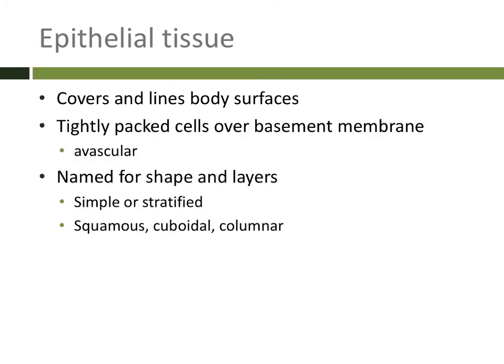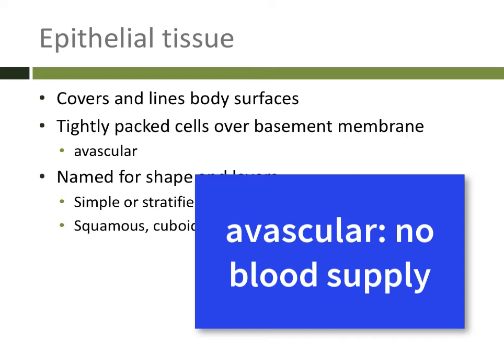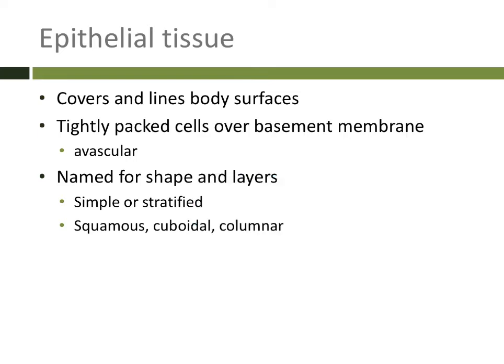Epithelial tissue is made up of very tightly packed cells that are attached to a basement membrane on the bottom. If you imagine a bunch of people standing very closely together with their shoulders touching shoulder to shoulder, that's kind of what epithelial cells look like when they work together in a tissue. One of the hallmarks of epithelial tissue is that they are avascular, meaning they don't have their own blood supply. The cells have to get their blood through the basement membrane from the connective tissue underneath. Connective tissue has a lot of blood vessels in it, and that provides the nourishment to the epithelial cells. So you can't get too many layers of epithelial tissue without the cells starting to die off because they're far away from the blood supply. We name epithelial tissue based on the number of layers and the shape of the cells.